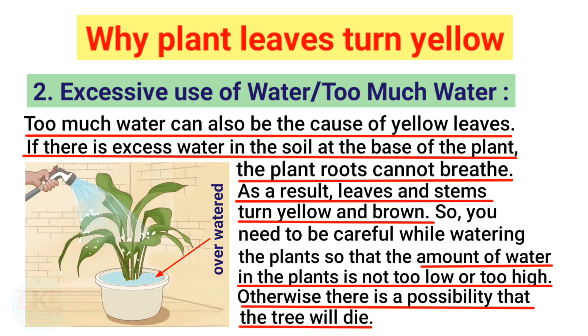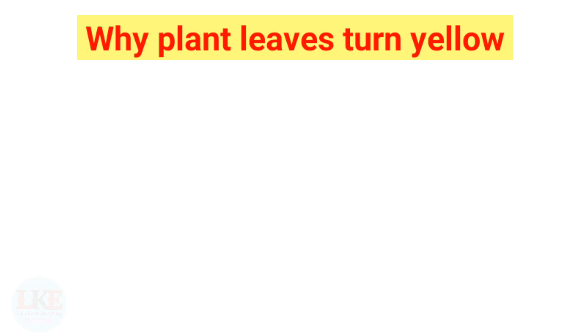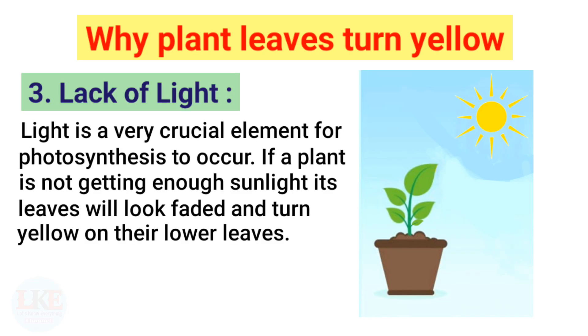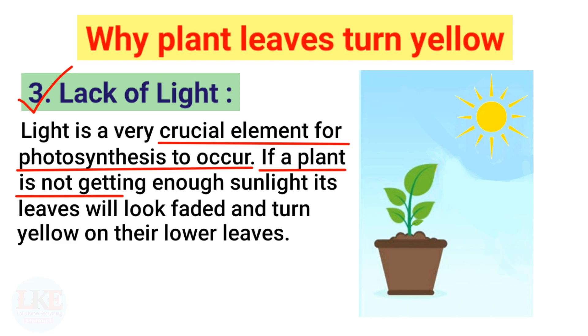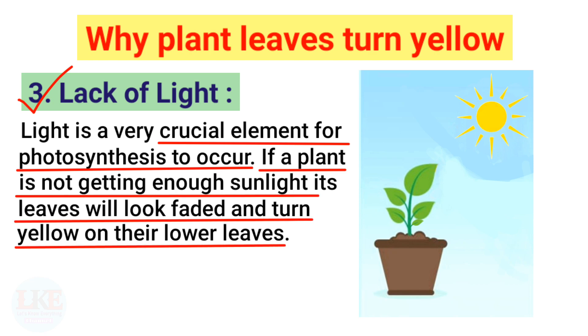Next point: lack of light. Light is a very crucial element for photosynthesis to occur. If a plant is not getting enough sunlight, its leaves will look faded and turn yellow on their lower leaves.